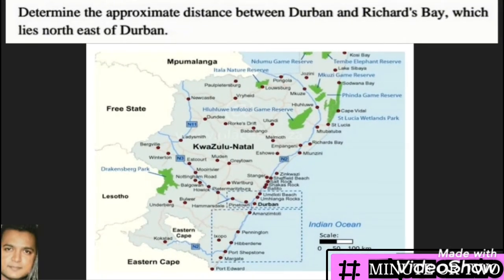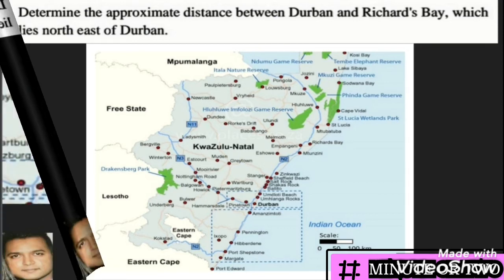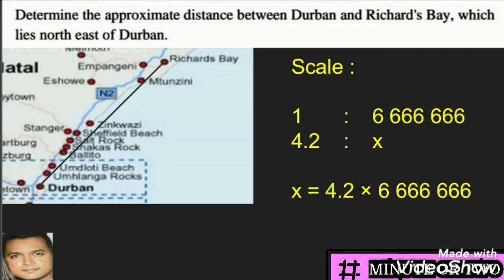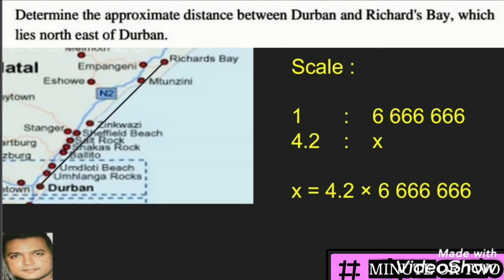The next question asks us to determine the approximate distance between Durban and Richards Bay, which lies northeast of Durban. I've drawn a line between these two places on the map. We place our ruler along that line and measure the distance from Durban to Richards Bay. Measuring in the booklet, we find the distance is 4.2 centimeters on the map, but we need to find the actual distance on the ground.